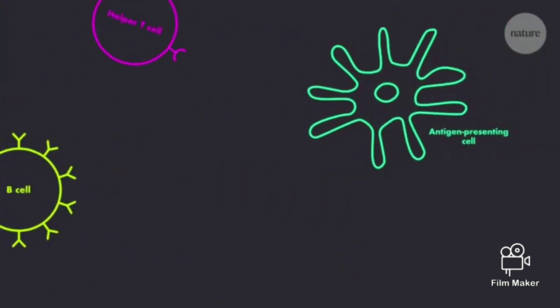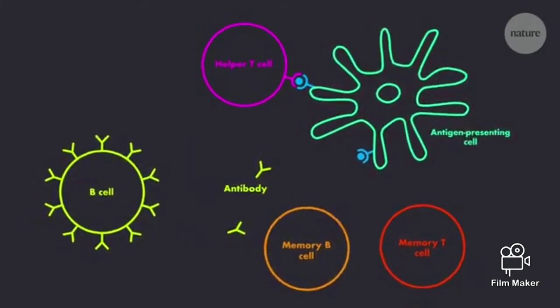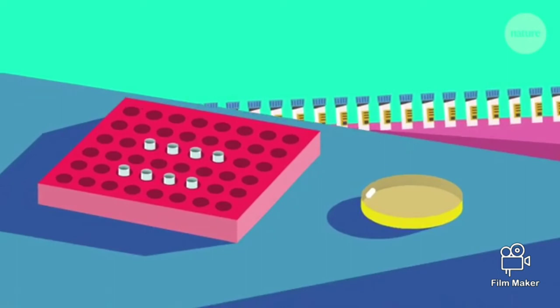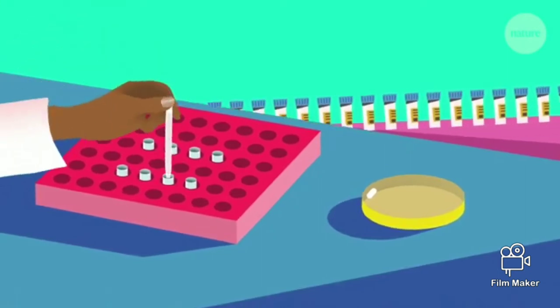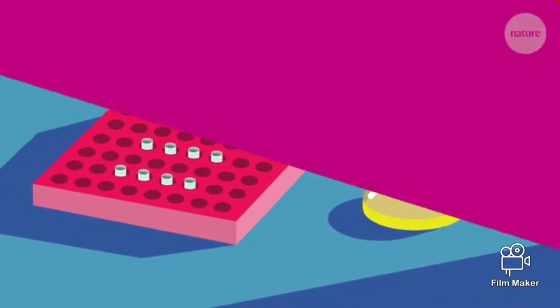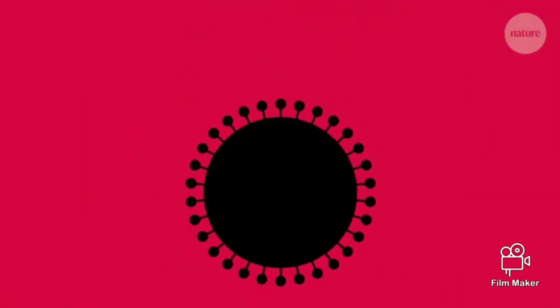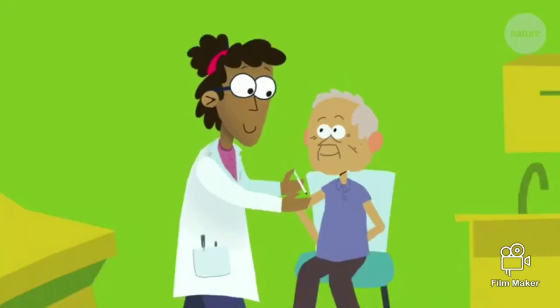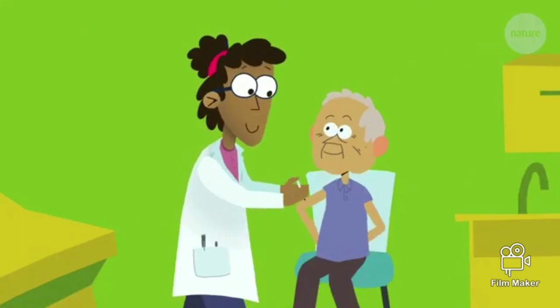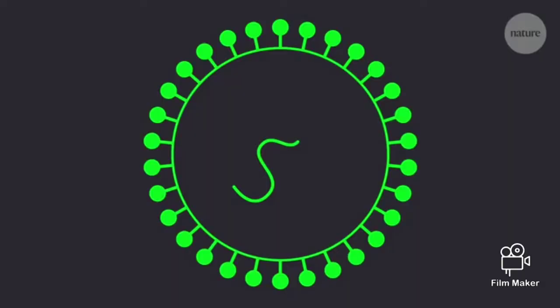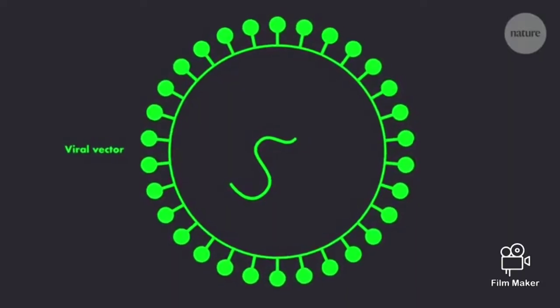Once inside the body, these DNA or RNA templates instruct our cells to start making antigens, which activate the immune response needed to build immunity. RNA and DNA are much easier and faster to produce in the lab than antigens are. They're also potentially safer than vaccines that contain whole pathogens. That means they could hopefully be used by people with weakened immune systems. But nucleic acid vaccines are still experimental.